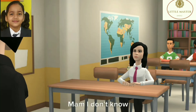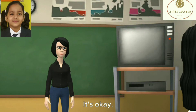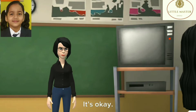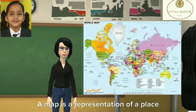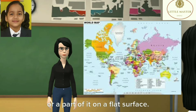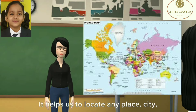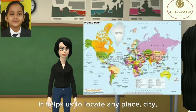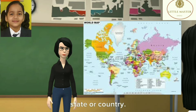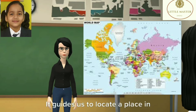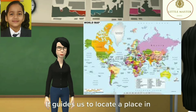Ma'am, I don't know. It's okay. A map is a representation of a place or a part of it on a flat surface. It helps us to locate any place, city, state or country.